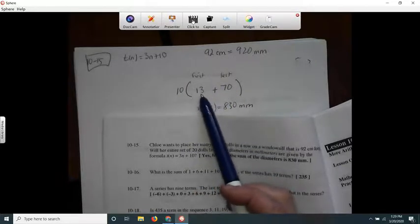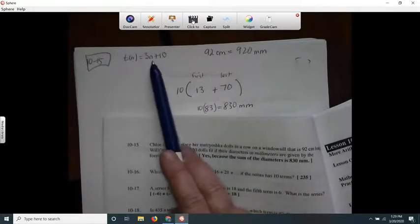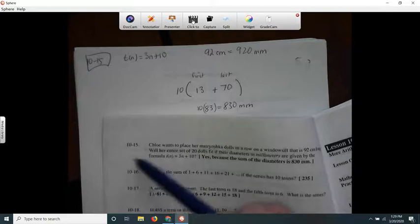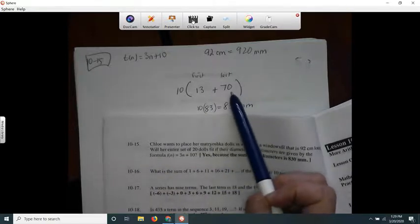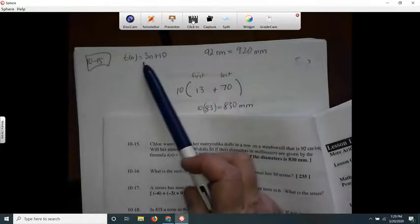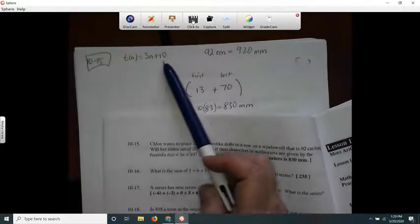The first term was 13. How did I get that? I put 1, 3 times 1 is 3 plus 10 is 13. And then the last doll was the 20th doll. So 3 times 20 is 60 plus 10 made 70.